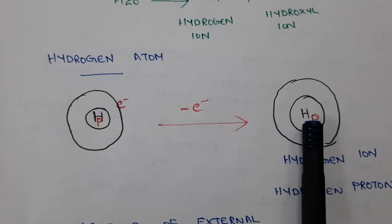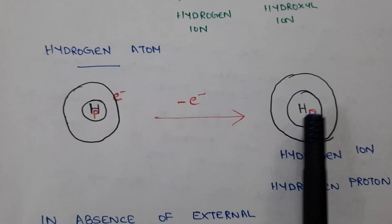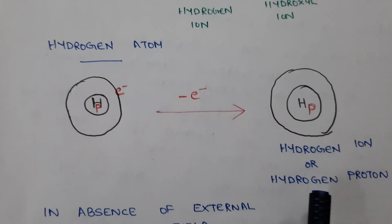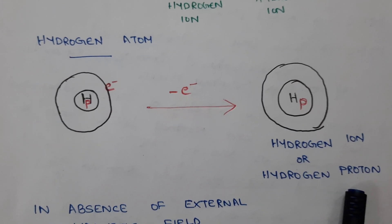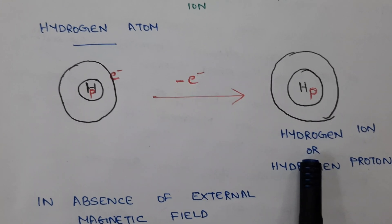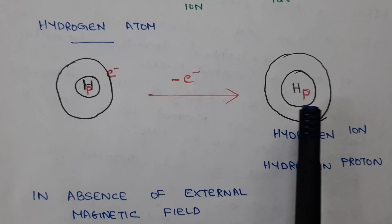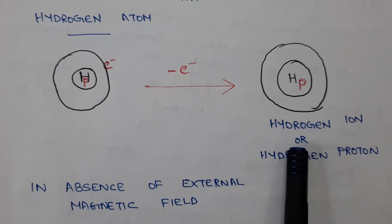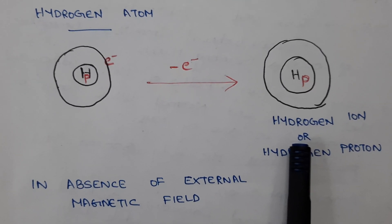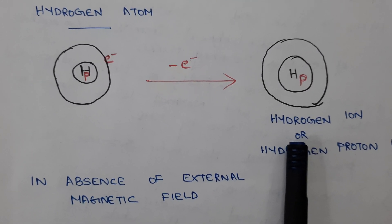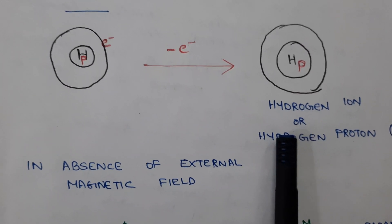The hydrogen ion doesn't have any electron but has a single proton, and because of that we call it the hydrogen proton. This hydrogen proton is found in the human body in abundance, and because of that we use hydrogen protons to produce signals in MRI imaging and convert those signals into images of the internal structure of our body.